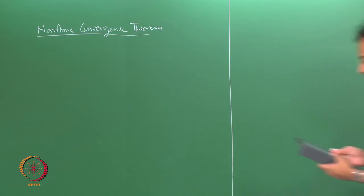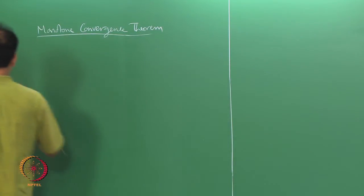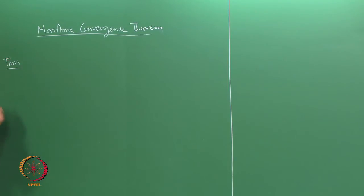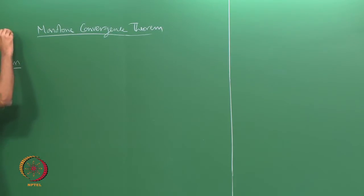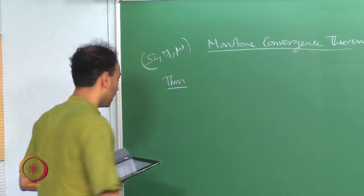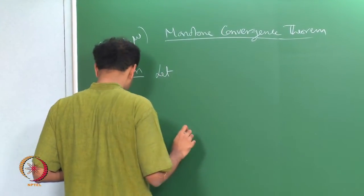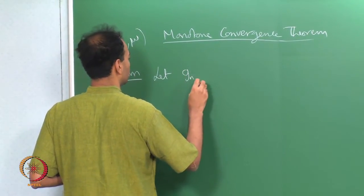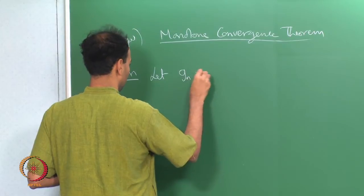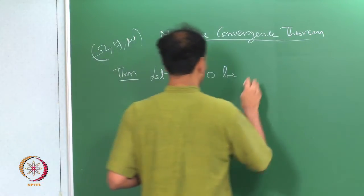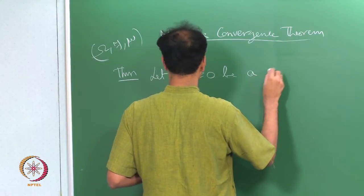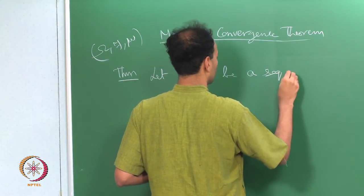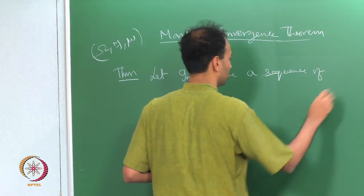So I will state the monotone convergence theorem. You have omega, f, mu — some measure space — and let g_n be a sequence of measurable functions.